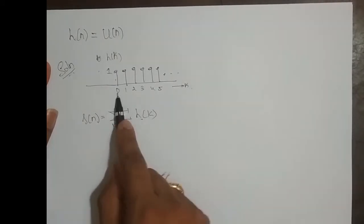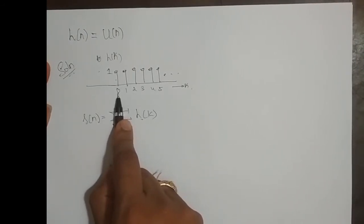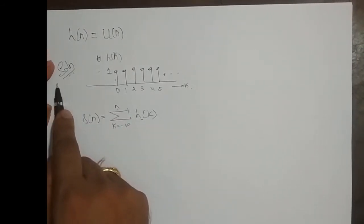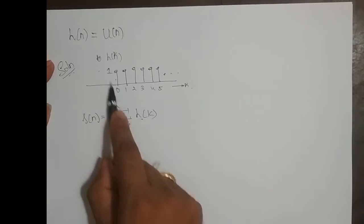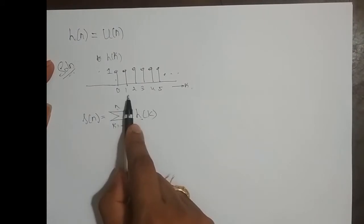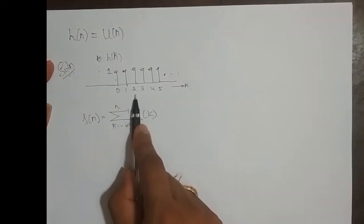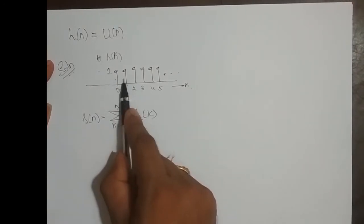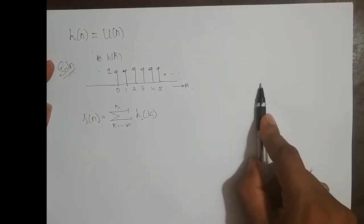If I give this n the value 0, what is the step response? It is 1. It is nothing but a running sum. If I put n here, it is the sum of all the samples from minus infinity till n. From minus infinity till minus 1 it is 0, so sum of all samples is 0. At n equal to 0, the sample is 1, so it is 1. When I keep n at 1, the step response is 1 plus 1, which is 2. If I keep it at 2, it is 3, because 1 plus 1 plus 1. If I keep it at 5, it is 6. If I keep it at 10, it is 11. If I keep it at 100, it is 101.